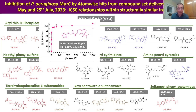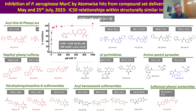We can do some time dependent studies to see whether there's time-dependent loss of inhibition. We can do some mass spectrometry to see if we see any modification of the protein. But there is a spread of IC50s which suggests that there is some sort of structure to the relationship, and I think it probably does merit further thought.